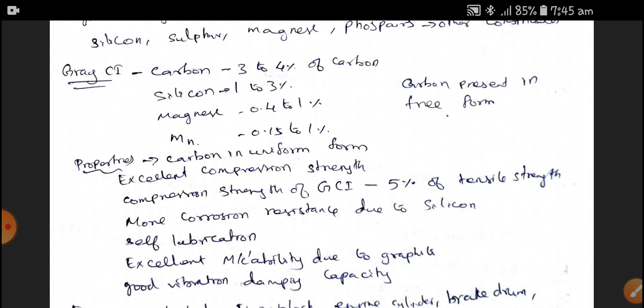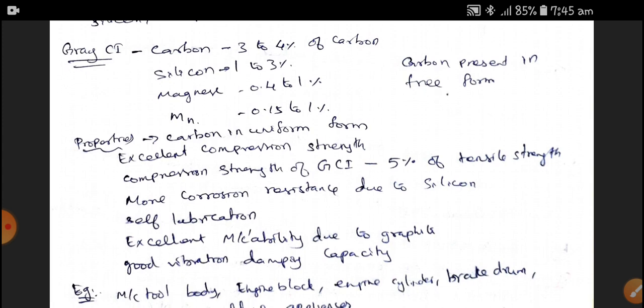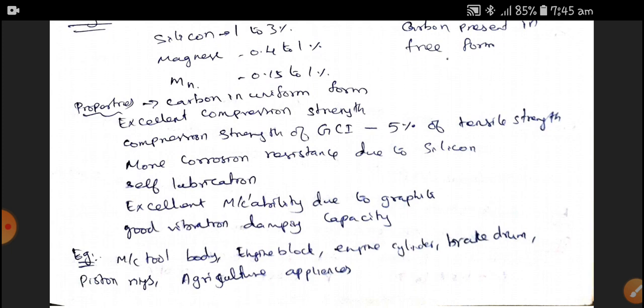Properties of Gray Cast Iron include Carbon in uniform form, excellent compressive strength — the compressive strength of Gray Cast Iron is about 5 times the tensile strength. It also has good corrosion resistance due to silicon, self-lubricating property, excellent machinability due to graphite present in free form, and good vibration damping capacity. Gray Cast Iron is used in machine tool bodies, engine blocks, engine cylinders, brake drums, piston rings, and agricultural applications.